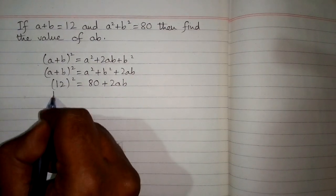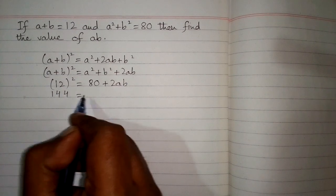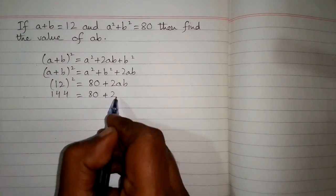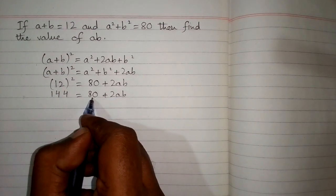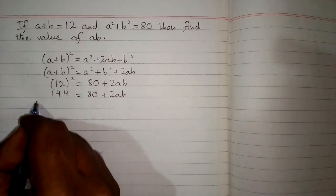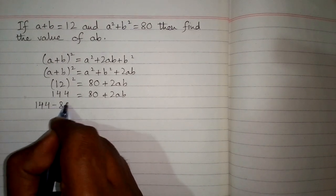The square of 12 is 144. Taking 80 to the other side of the equation, we have 144 - 80.